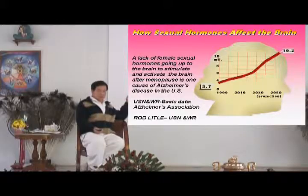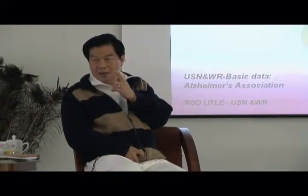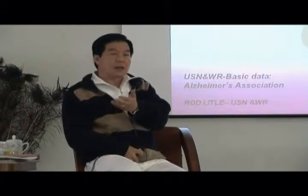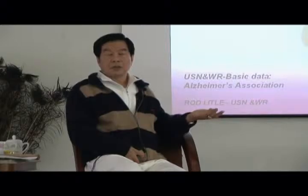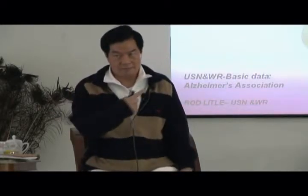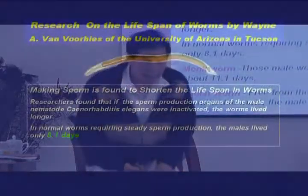Research by the Alzheimer's Association discovered that a lack of sexual hormone in women is a major cause of Alzheimer's disease after menopause. They found the sexual hormone has to rise up and stimulate the brain every day. If the sexual hormone doesn't go up to stimulate the brain, the brain becomes less active and gradually declines, and the cells die — including cells that remember names and addresses. What you're practicing here is exactly what science is discovering: drawing the sexual energy upward into the brain.